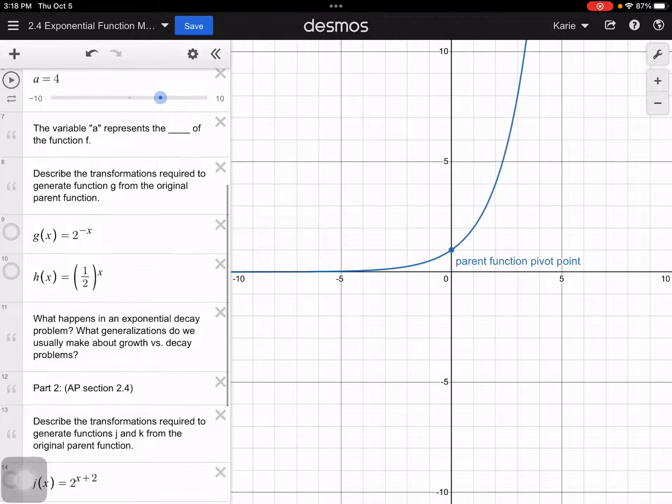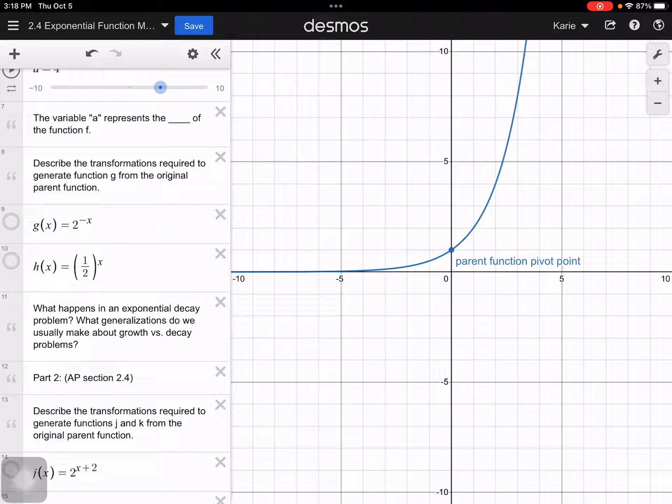It says describe the transformations required to generate function g. Okay, so now function g has a negative in there in the exponent. And so what that has done is it has reflected my original graph over the y-axis. So when I turn that on, it looks something like that. So that was a reflection over the y-axis. But we also know with our exponent properties that that could be written as 1 over 2 to the x or 1/2 in parentheses to the x.